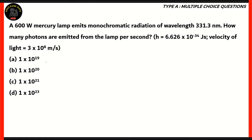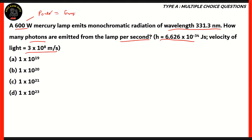Let's look at another question. A 600-watt mercury lamp emits monochromatic radiation of wavelength 331.3 nanometers. How many photons are emitted from the lamp per second? We have the value of h and the value of the velocity of light. Now remember, we have power as 600 watts, which is basically energy by time. So therefore, the energy required for this question is 600 joules, because we're finding how many photons are emitted per second, so the energy per second gives us power.